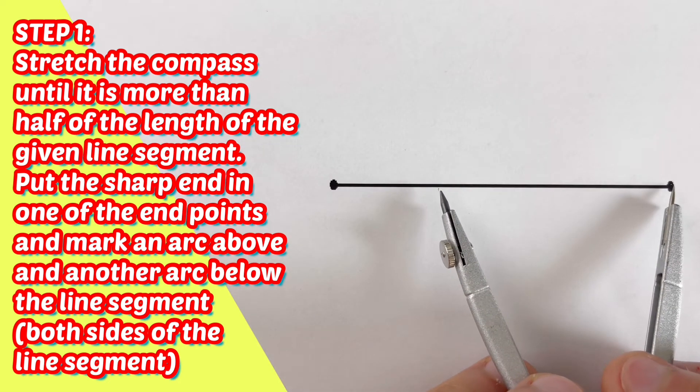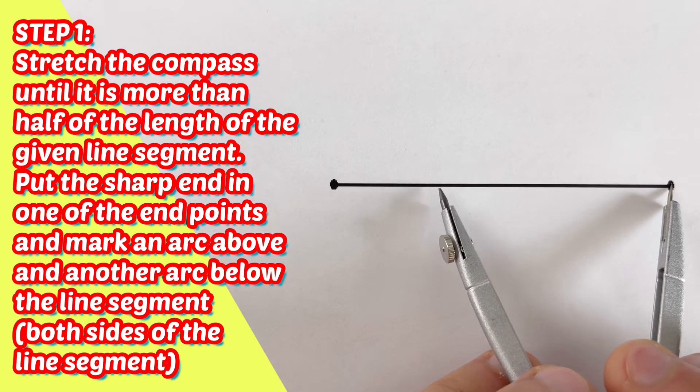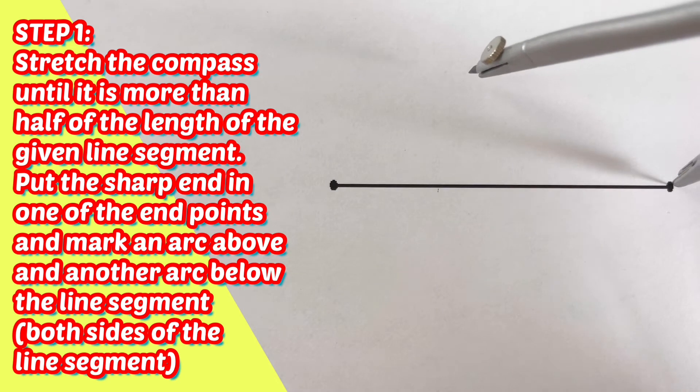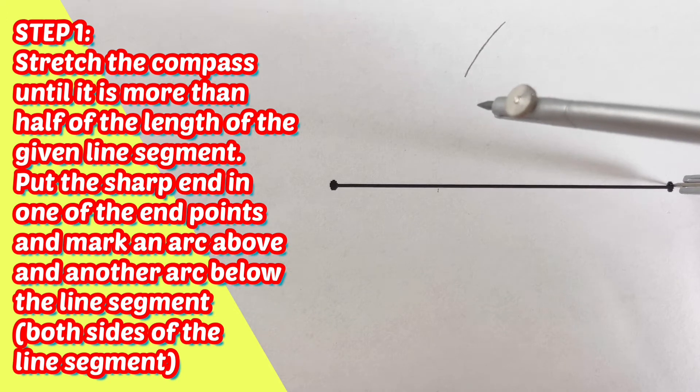So I'm going to put the sharp end of this compass to one of the endpoints. So I'm going to mark an arc above the line segment. So I create that arc right there.